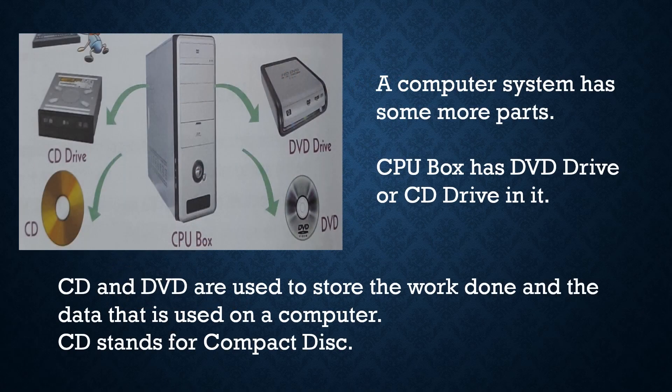Now let us look at the given picture. The picture shows us a CPU box. On the left hand side, we can see CD drive. On the right hand side, DVD drive. At the bottom left hand side, CD, and at the right hand side, DVD.